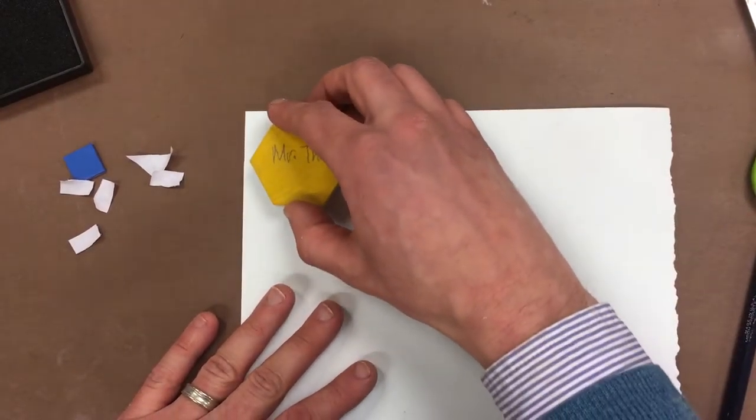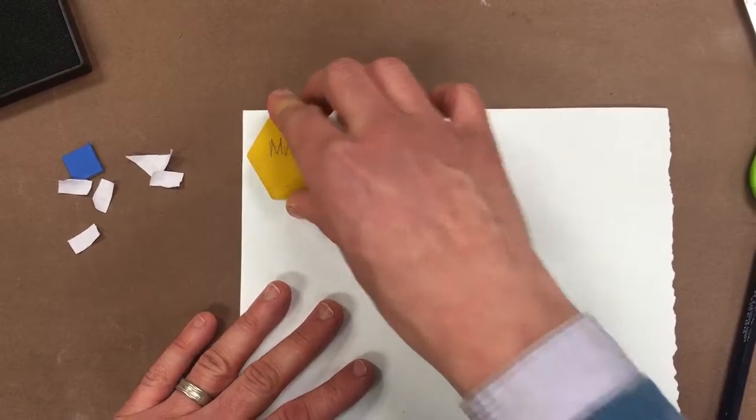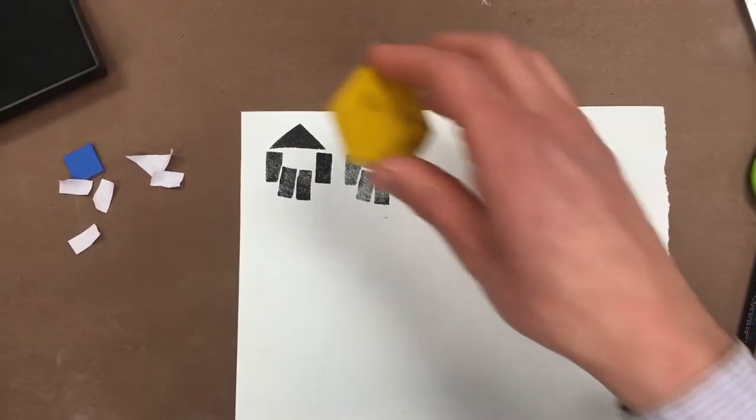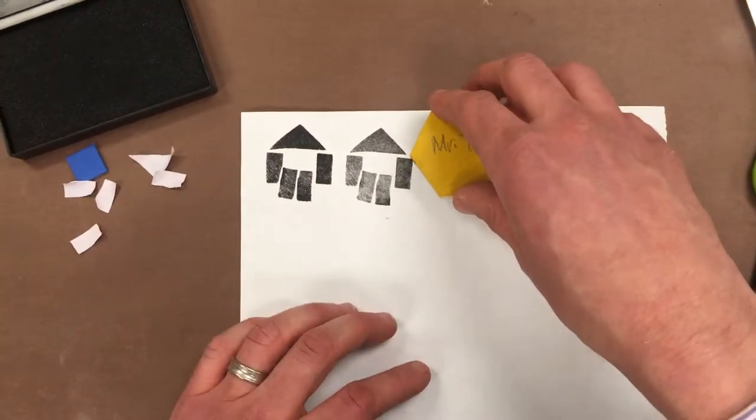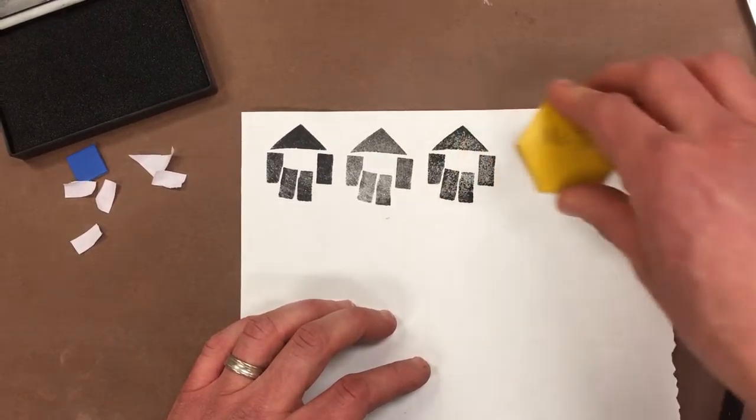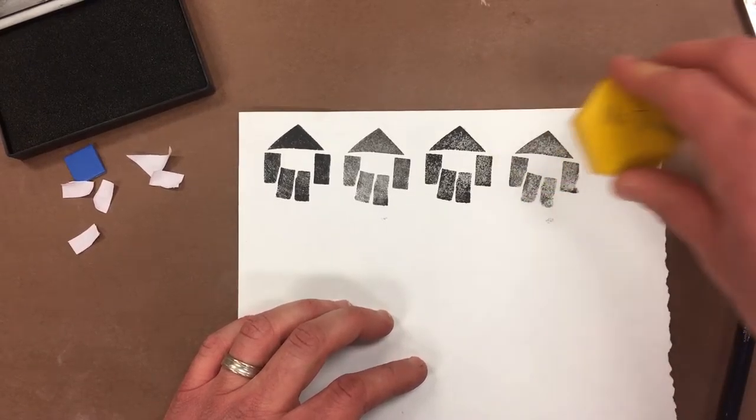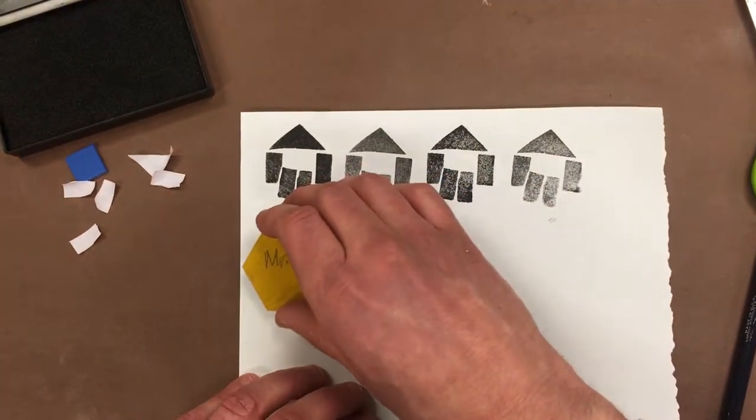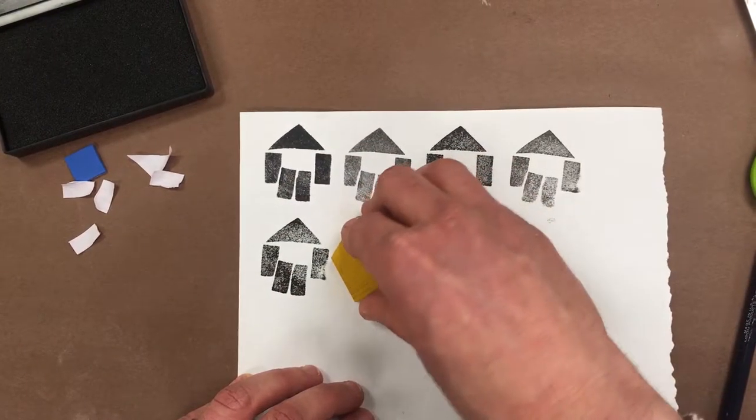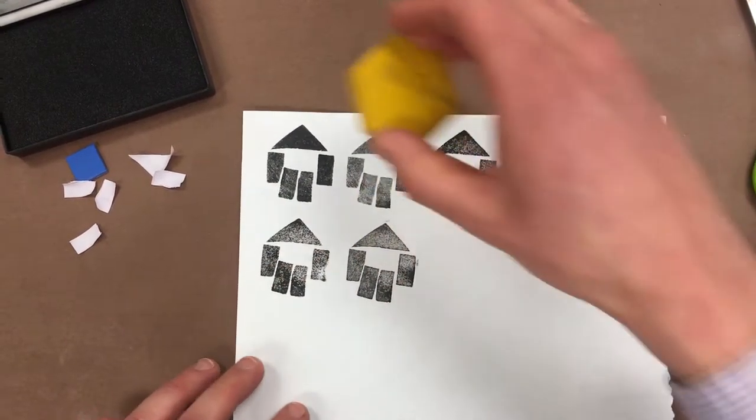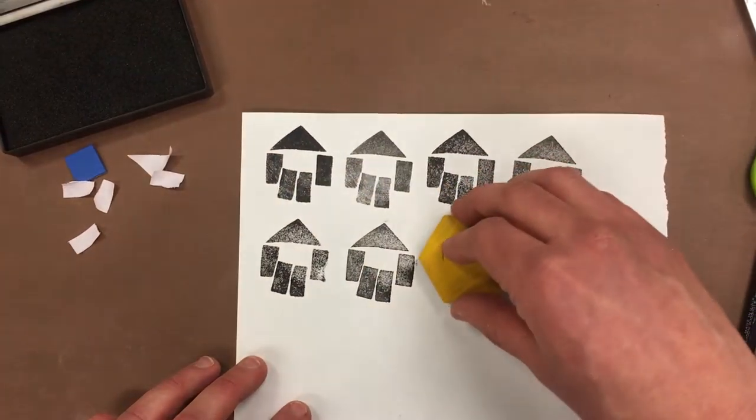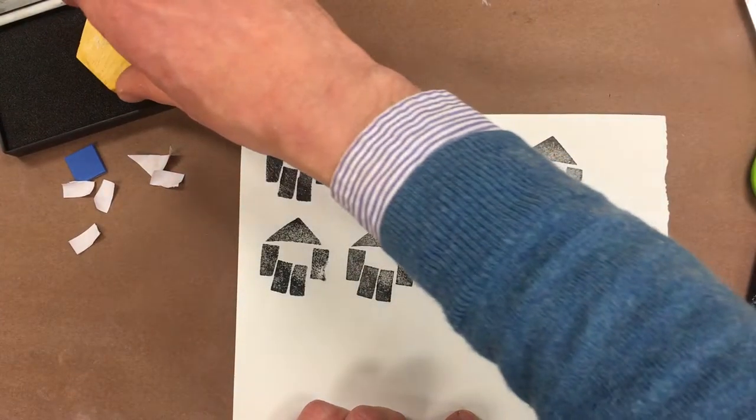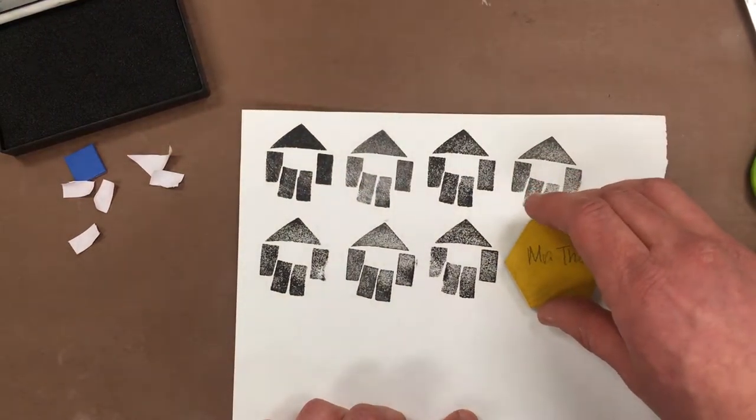I'm going to turn it to this side and just make a row by pressing firmly on my paper. So it looks like I can get about two stamps worth in it. You might want to just go back and forth. Maybe you have a neighbor that did a stamp and you can trade with them and have an alternating pattern on there.